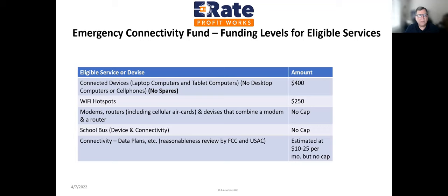Funding levels: for connected devices — laptop and tablet computers, no desktop computers and no spares — $400 each. Chromebooks and similar devices are eligible with a $400 cap. Wi-Fi hotspots are capped at $250. Devices that combine a modem and a router have no cap. School buses — device and connectivity — also have no cap. Data plans are estimated at $10–$25 per month but there's no cap; however, they really start to question it when it gets over $40 per month.